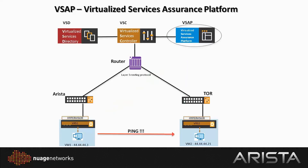After that, we're going to try to shut down the network interface between the Arista and the core network to simulate a link failure. We're going to show you how VSAP can do event correlation, detecting alarms and troubleshooting, showing the network admin where the issue is and how to get it fixed. VSAP will identify that the ping failed because the link between the Arista and the core routers was shut down. Let's do it in the demo.